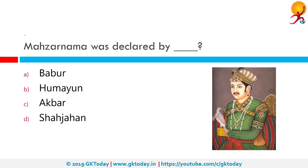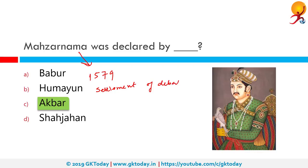Mazhar Nama was declared by whom? The correct answer is Akbar. In 1579, Mazhar Nama was declared by Akbar. The emperor declared that if there was any conflict in the views of debaters, he was entitled to choose any interpretation — this had to do with the settlement of debates. With this, Akbar pounced upon the dominance of the intolerant orthodox and allowed free development of a genuine religious spirit. Mazhar Nama was the idea of Abu Fazl and Faizi's father, stating that the authority of the king was higher than that of a mujtahid or doctor of faith.